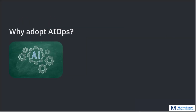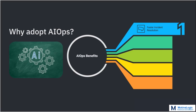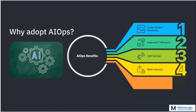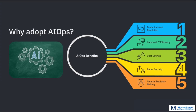So, why are businesses adopting AIOps? Here are some major benefits. First, faster incident resolution — AIOps reduces downtime by identifying and fixing issues before they impact users. Second, improved IT efficiency — IT teams no longer have to spend hours manually troubleshooting, as AIOps automates the process. Third, cost savings — by preventing failures, businesses save money that would have been lost due to system outages. Fourth, better security — AIOps can detect cybersecurity threats early and alert IT teams instantly. Fifth, smarter decision making — AIOps provides real-time insights, helping businesses optimize their IT infrastructure. Simply put, AIOps makes IT operations faster, smarter, and more reliable.